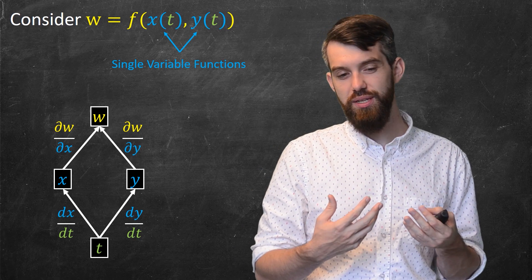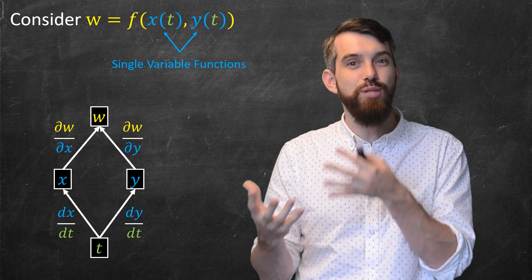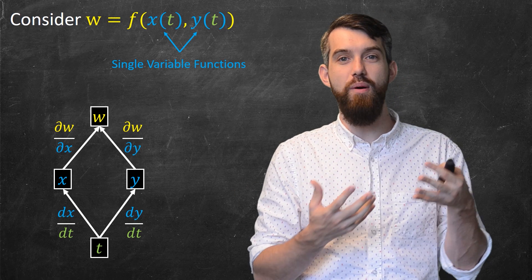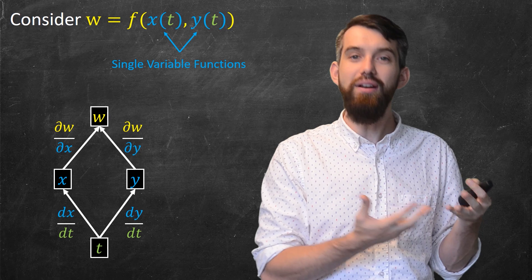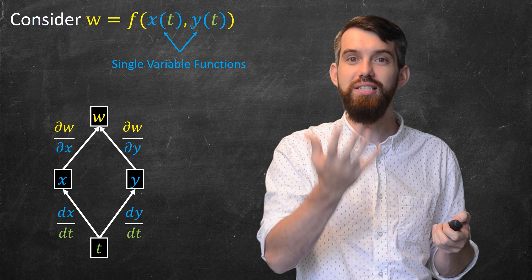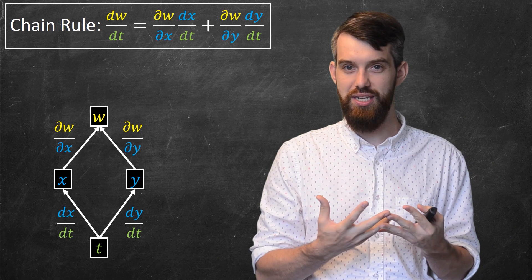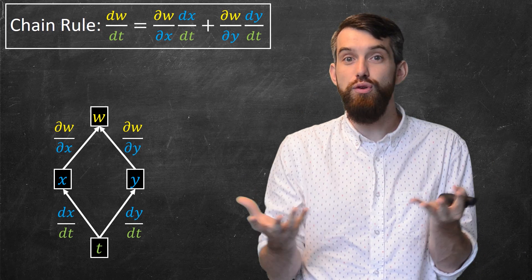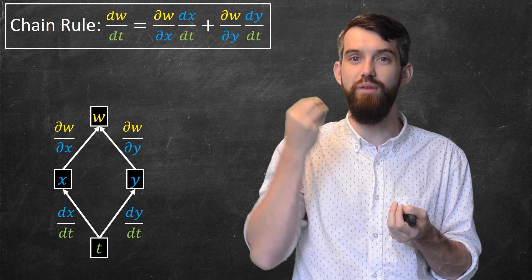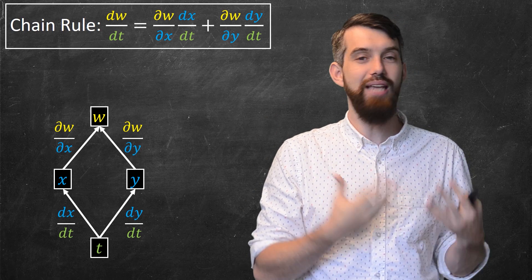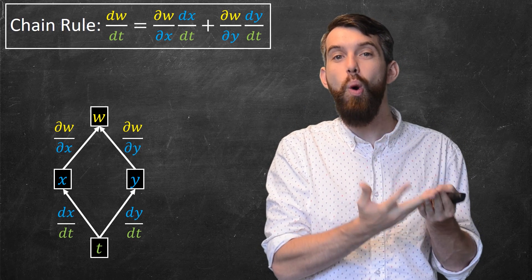In other words, w is depending on changes coming through the x branch of the dependency diagram and changes coming through the y branch. So the final answer is very analogous to the chain rule, but it's a sum of two things: dw/dt consists of ∂w/∂x multiplied by dx/dt, plus ∂w/∂y multiplied by dy/dt.